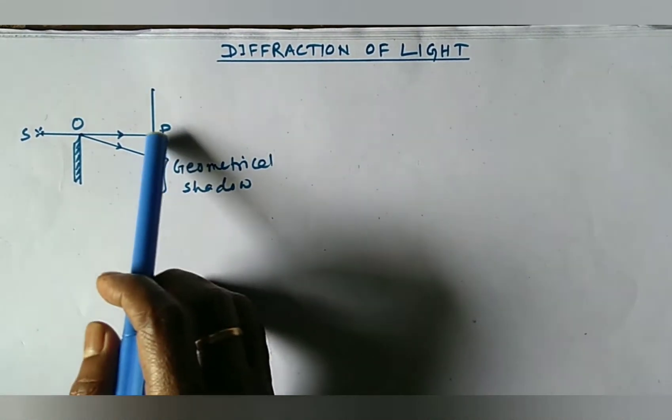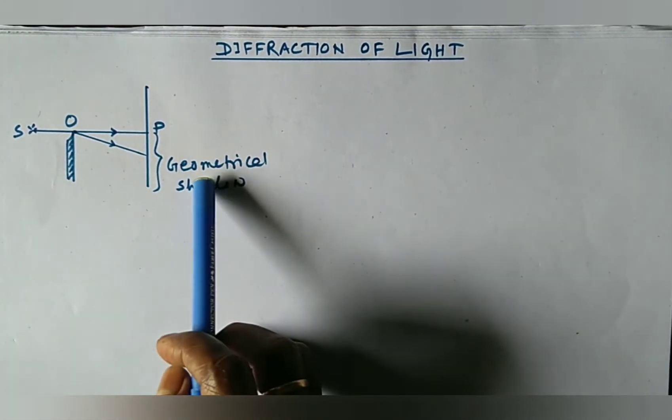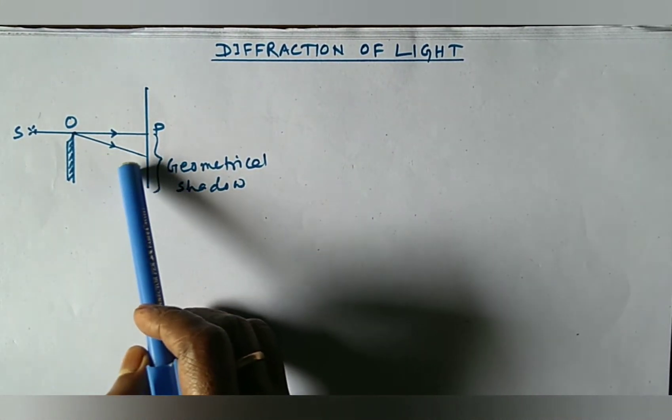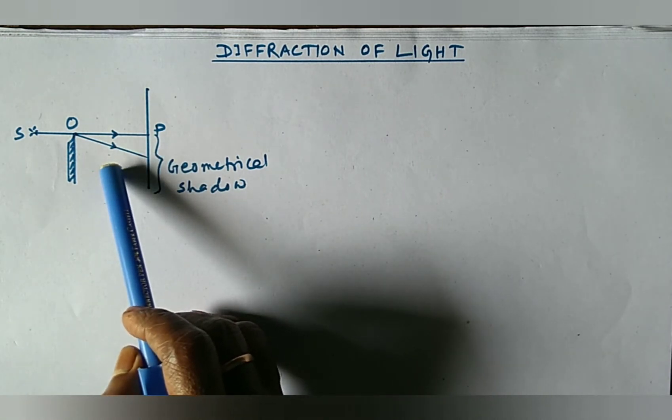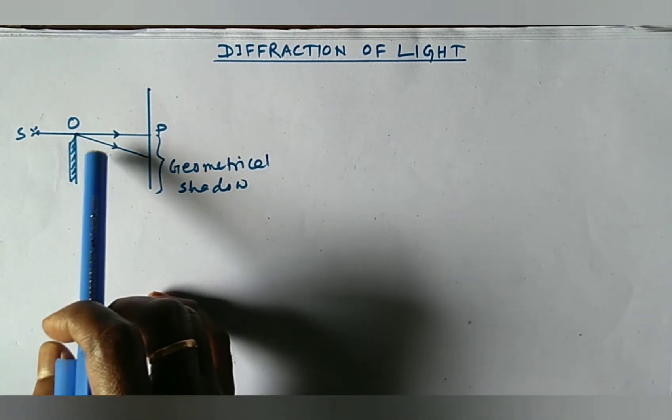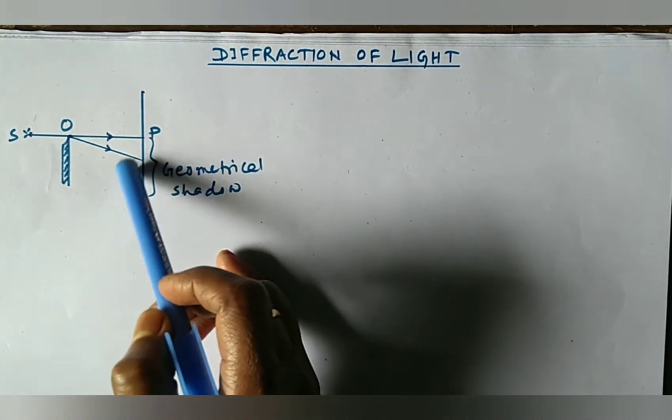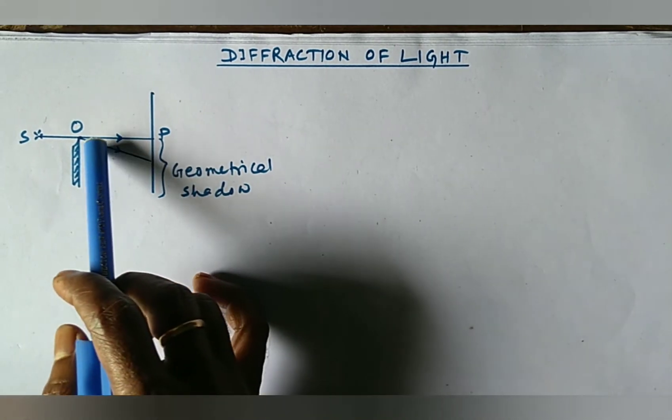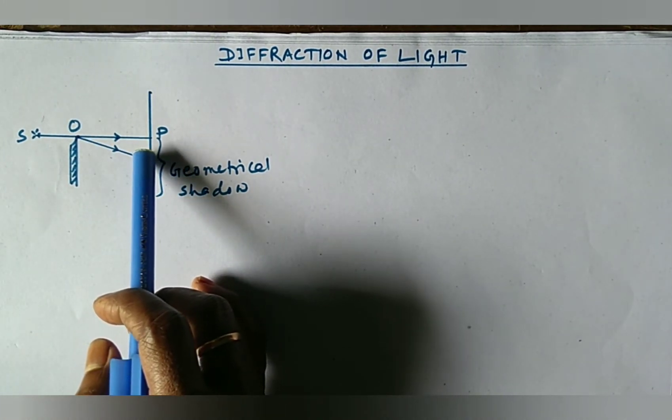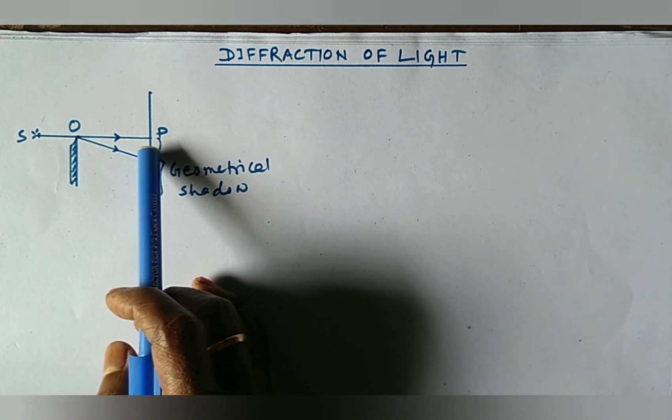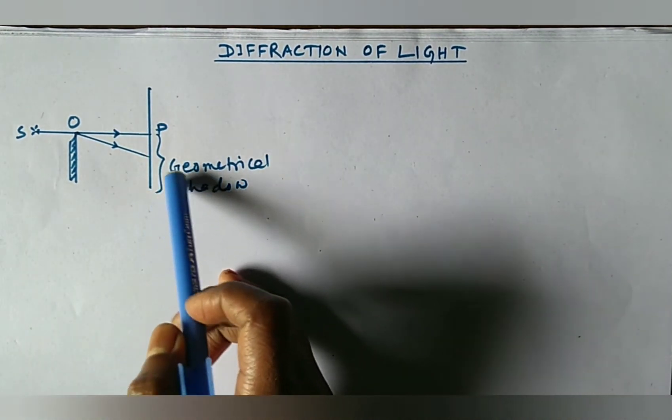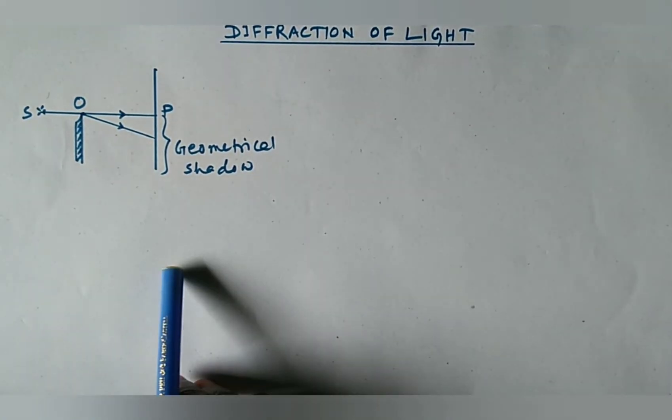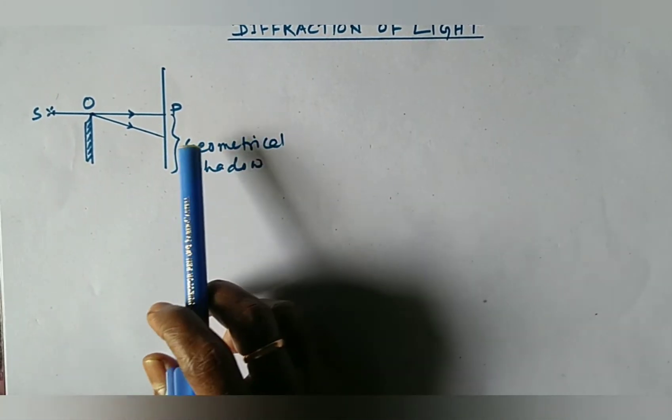Actually, this is the geometrical shadow region and it should be completely dark, but we see that this region is not completely dark. Some illumination of light to some extent is present in the shadow region and this phenomenon is known as diffraction of light.